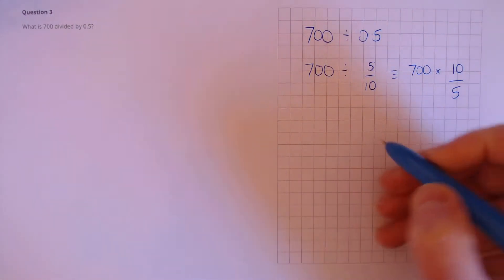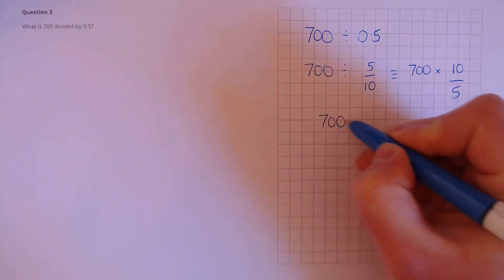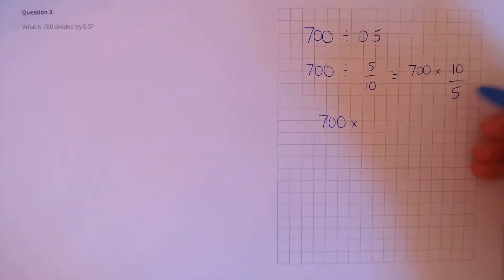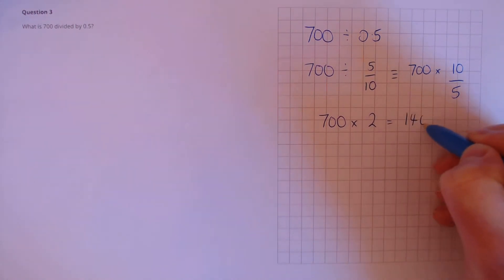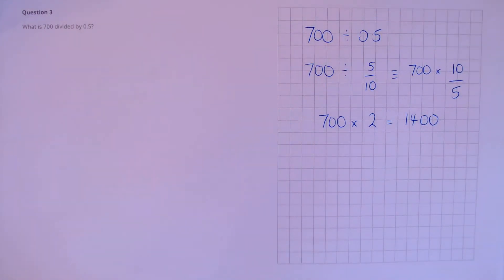First, let's simplify this fraction. So 700 multiplied by... 10 divided by 5, we know that's 2. So 700 times 2 is 1,400.